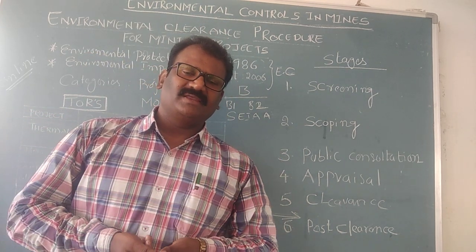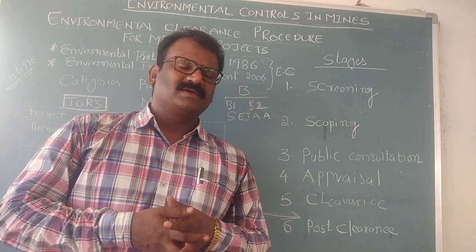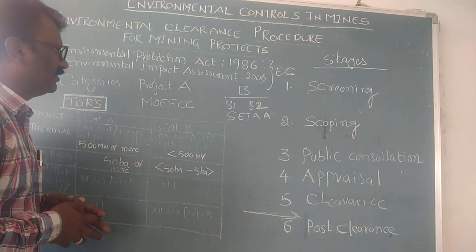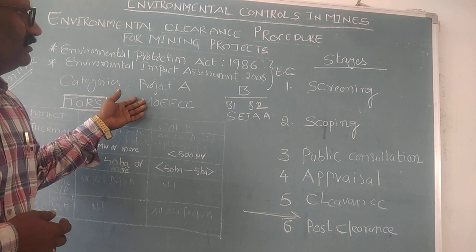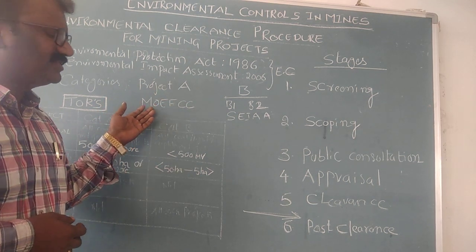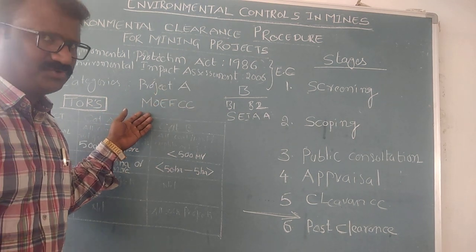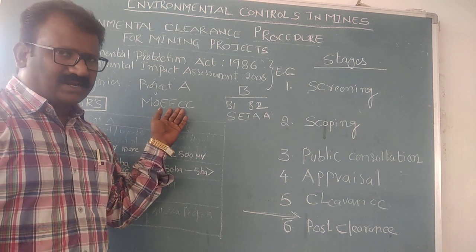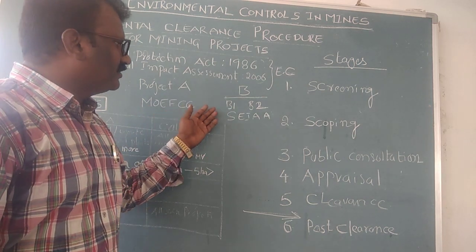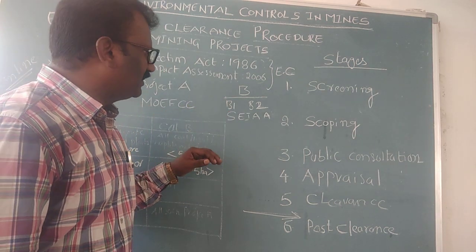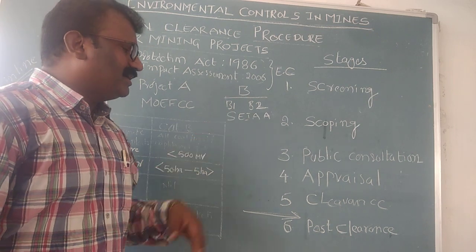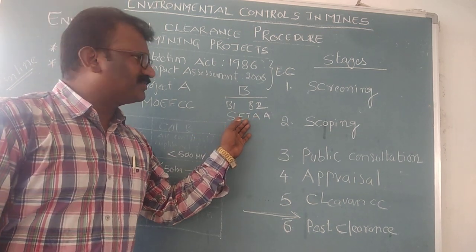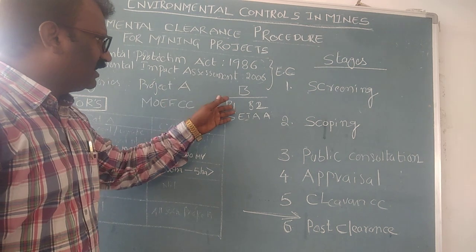Category A means the central government — the Ministry of Environment, Forest and Climate Change — issues the certificate. Category B is divided into sub-classes B1 and B2, for which the State Environmental Impact Assessment Authority gives the clearance certificate.